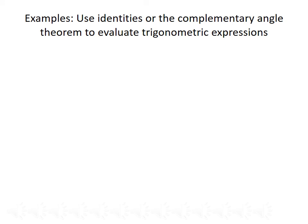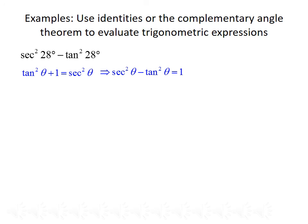Now let's use identities and the complementary angle theorem to evaluate some trigonometric expressions. For the first example, we want to determine secant squared of 28 degrees minus tangent squared of 28 degrees without a calculator. Since the expression has both secant squared and tangent squared, we consider the Pythagorean identity: tangent squared of theta plus 1 equals secant squared of theta. Subtracting tangent squared from both sides gives secant squared minus tangent squared equals 1. So secant squared of 28 degrees minus tangent squared of 28 degrees equals 1.